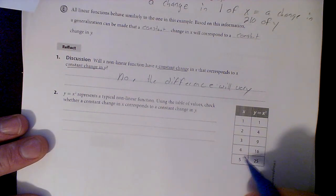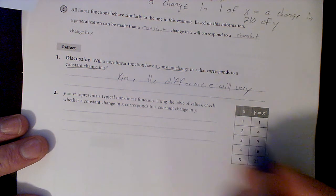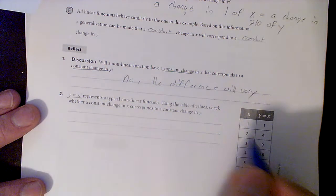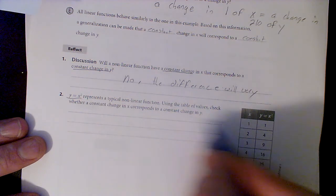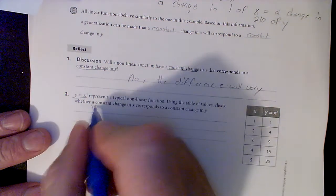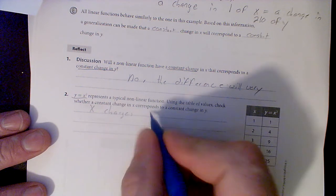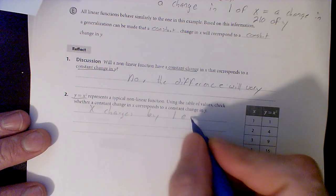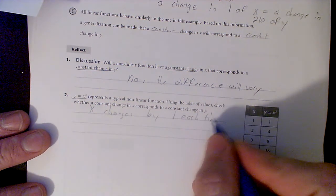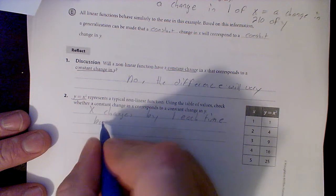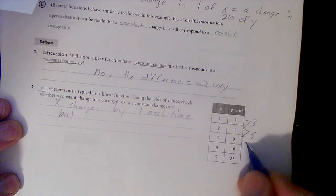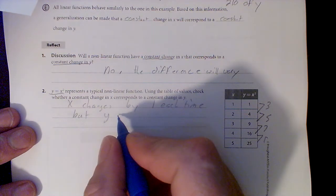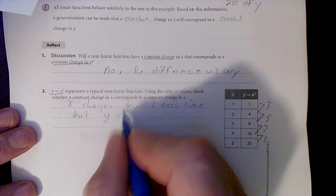So in this guy, we've got a constant change in X, but let's see if the change in Y... We have the equation Y equals X squared. Using the table values, check whether a constant change of X corresponds to a constant change of Y. No, X changes by one each time, but let's see: this is by three, by five, by seven, by nine. Y changes vary.